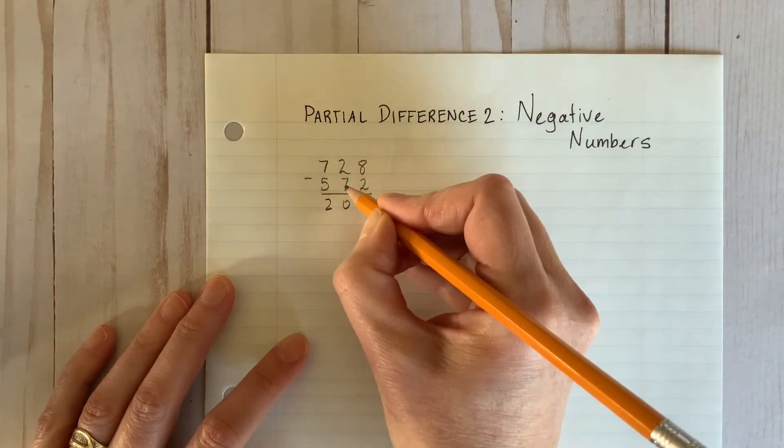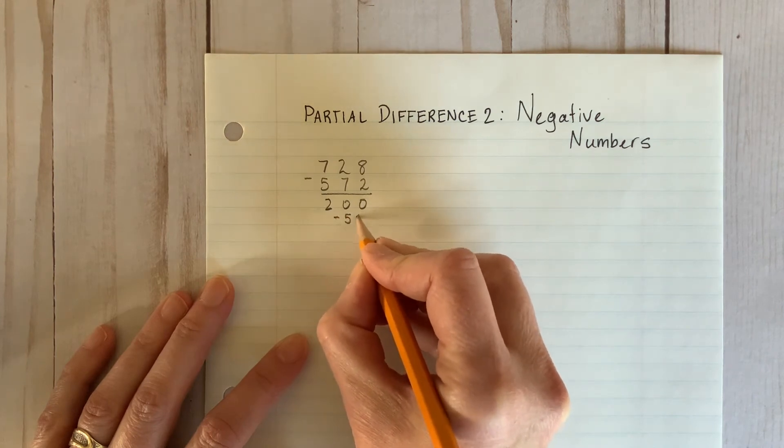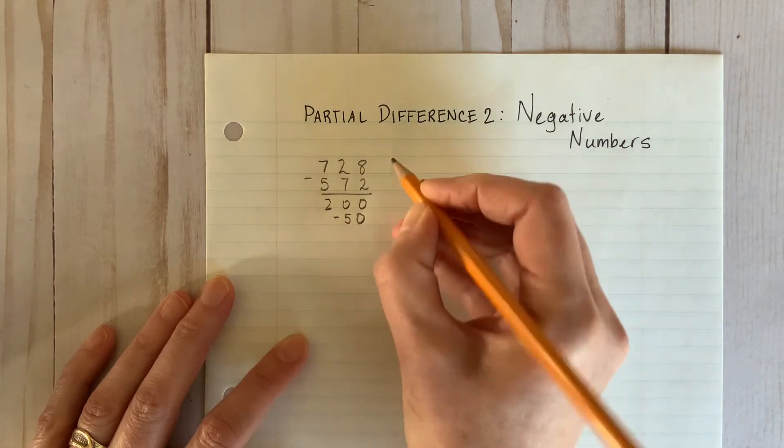Now, instead of borrowing here, they learn to do this. Yep, that's right. 20 take away 70 leaves you with negative 50.